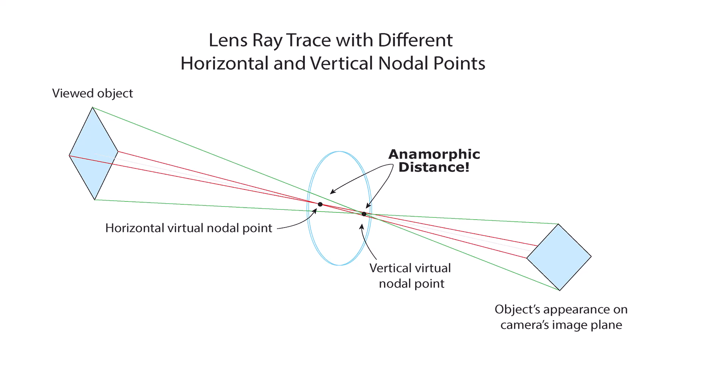The distance between the two nodal points is the anamorphic distance. It can be positive or negative, producing different effects on the image. A positive distance, measured from the horizontal nodal point, gives you wider faces up close because the face is closer to the horizontal nodal point than the vertical. You can also consider this to be a zoom with vertical shrinkage.